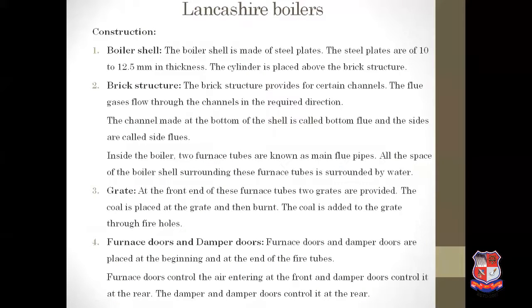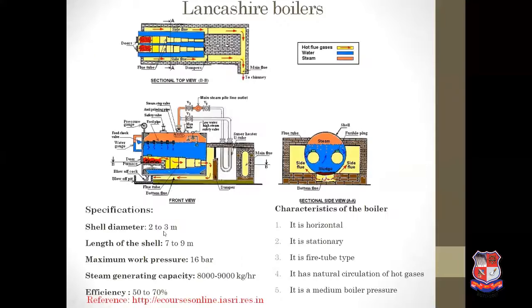A grate is provided at the front end of the furnace tubes. Coal is placed on the grate and added through fire holes. The coal is then burned.